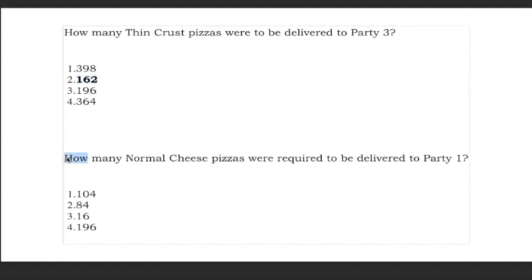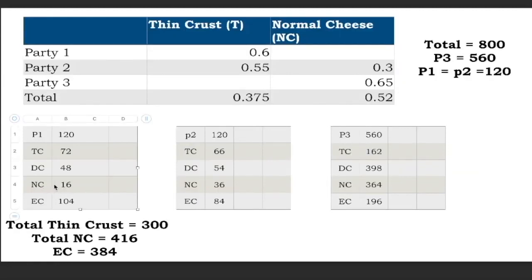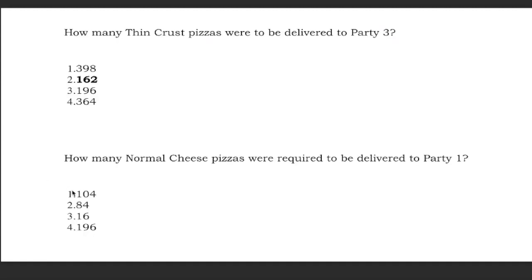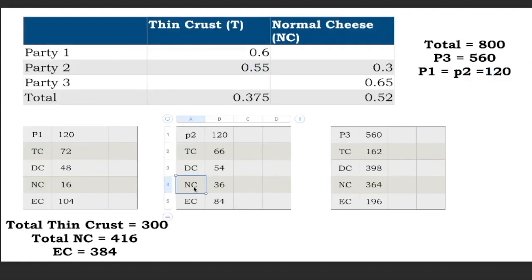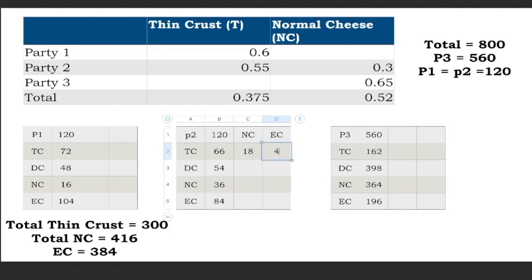Question 2 asks how many normal cheese pizzas were delivered to party 1. From the table, that value is 16, so the answer is option C. For question 3, additional information is provided: 50 percent of party 2's normal cheese pizzas were of the thin crust variety. Party 2 has 36 normal cheese pizzas, so 50 percent means 18 of those 36 were thin crust.